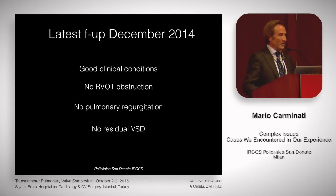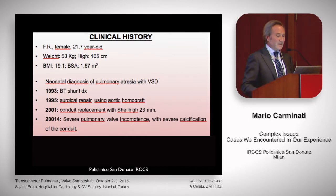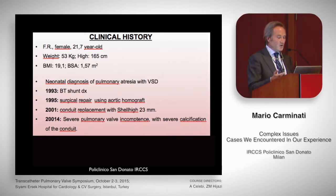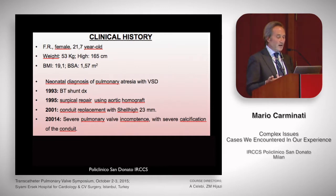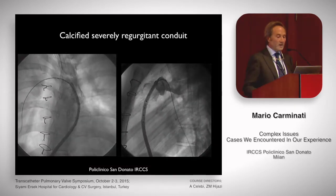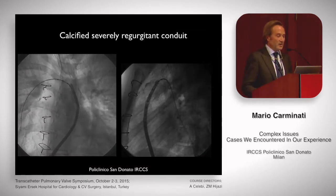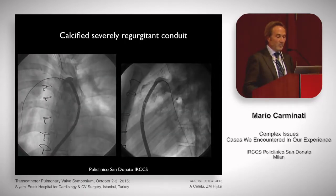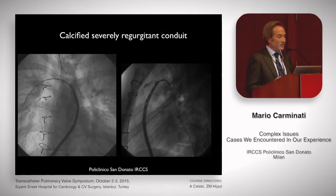That's an exceedingly complex, complicated case. The next patient is a 21-year-old female with neonatal diagnosis of pulmonary atresia VSD. She had a BT shunt, then a surgical repair using homograft, then conduit replacement with a shelhigh conduit. She came to our observation for severe pulmonary incompetence and calcification.